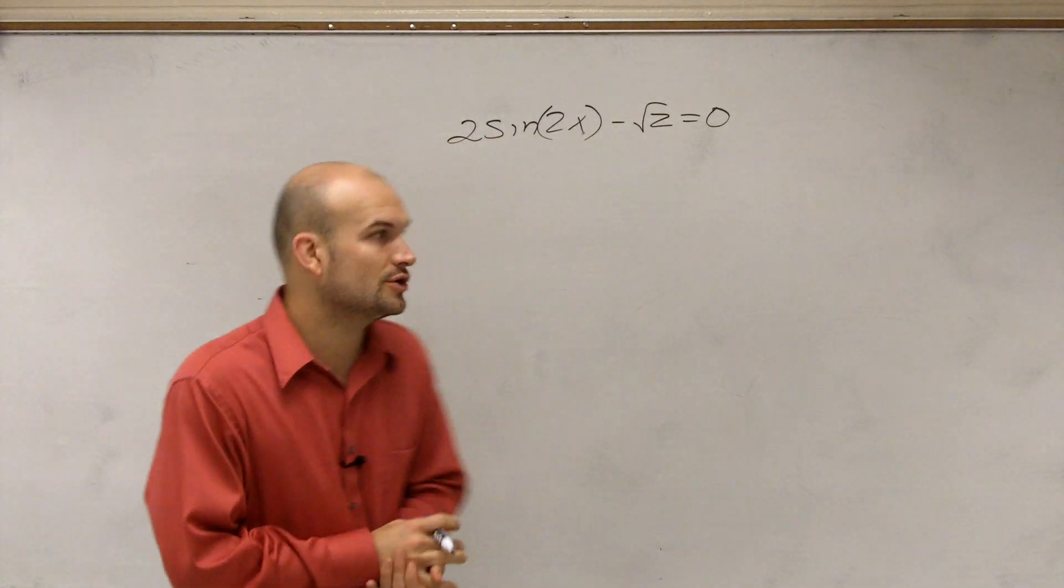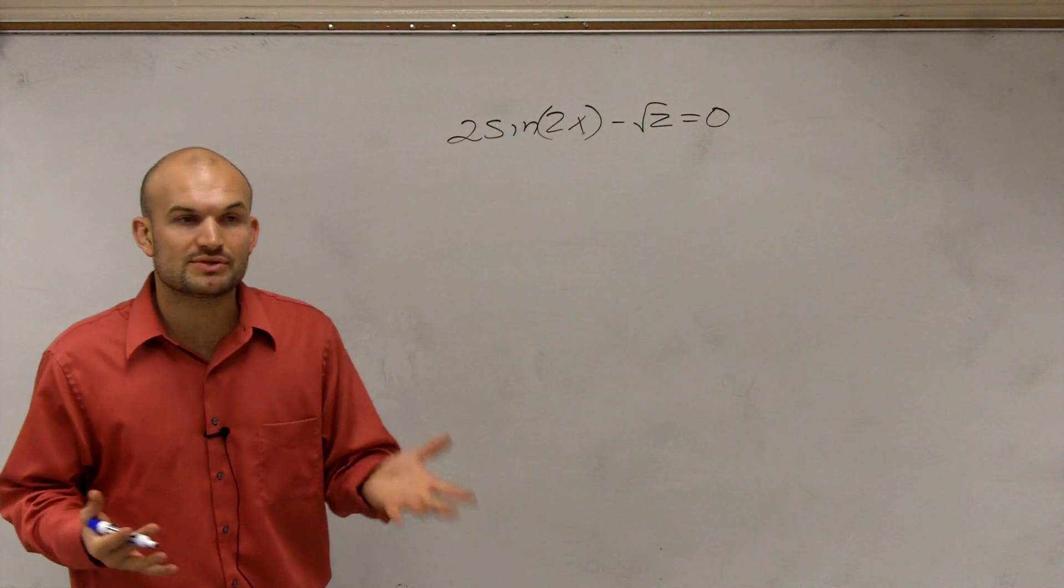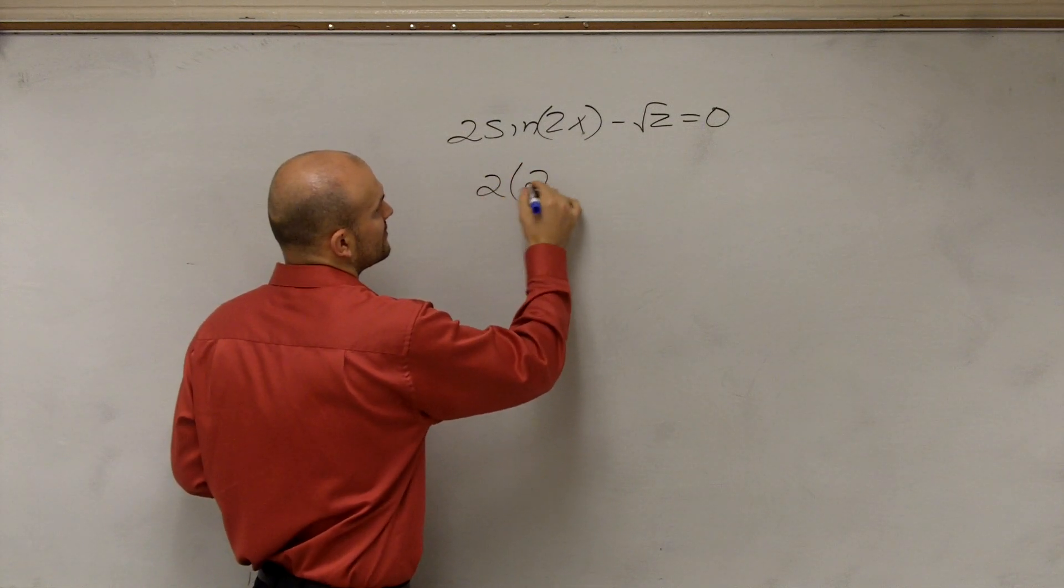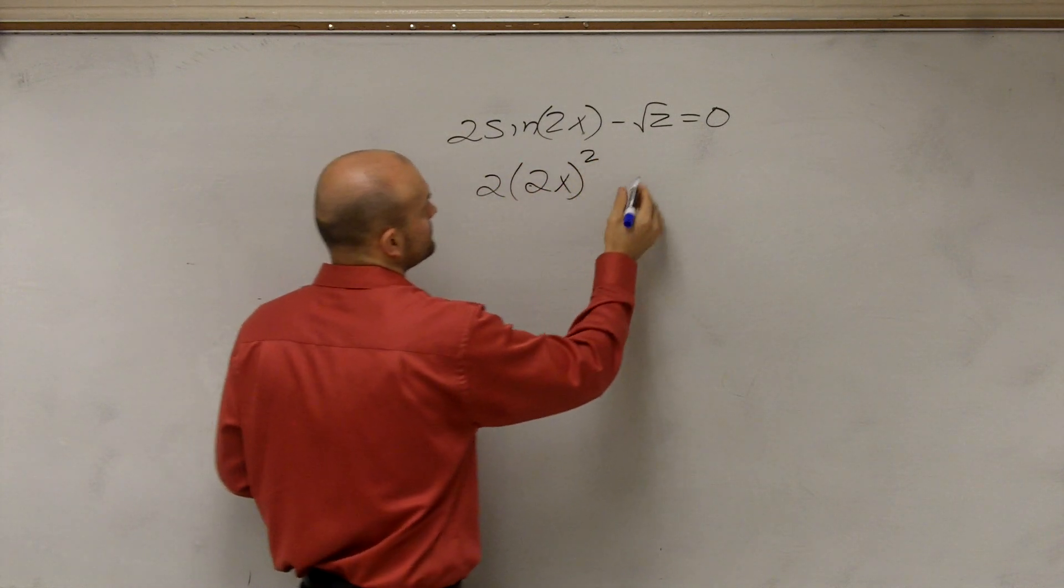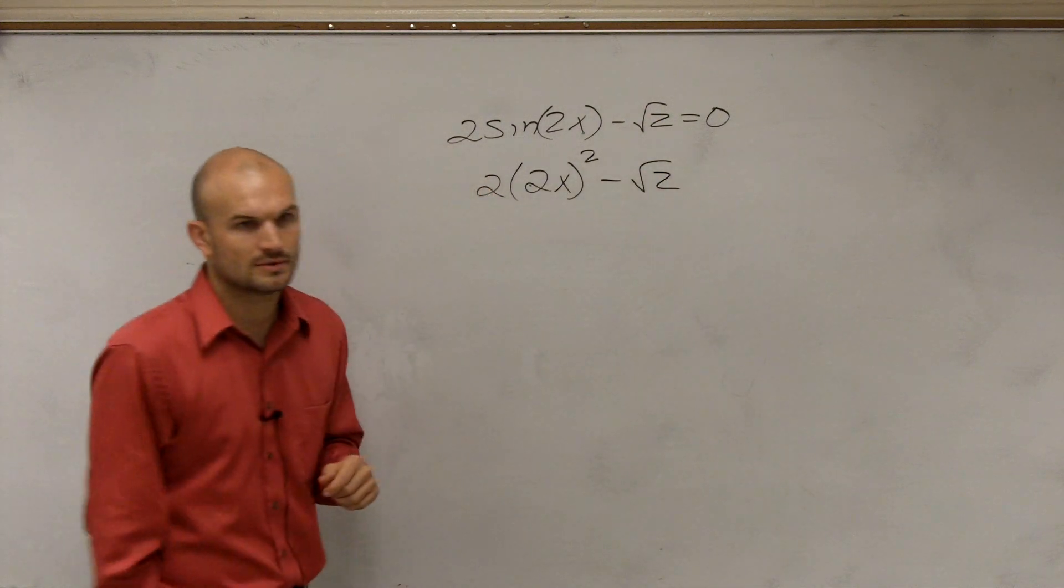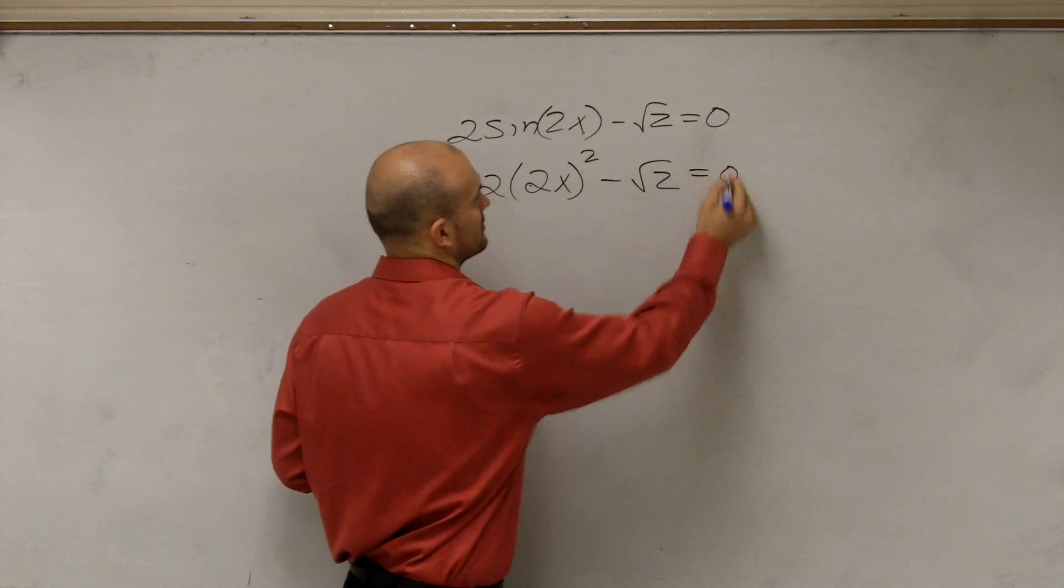And what I'm going to do is I'm just going to show you how we would solve for this. So let's say I have 2 times 2x squared minus the square root of 2 equals 0.